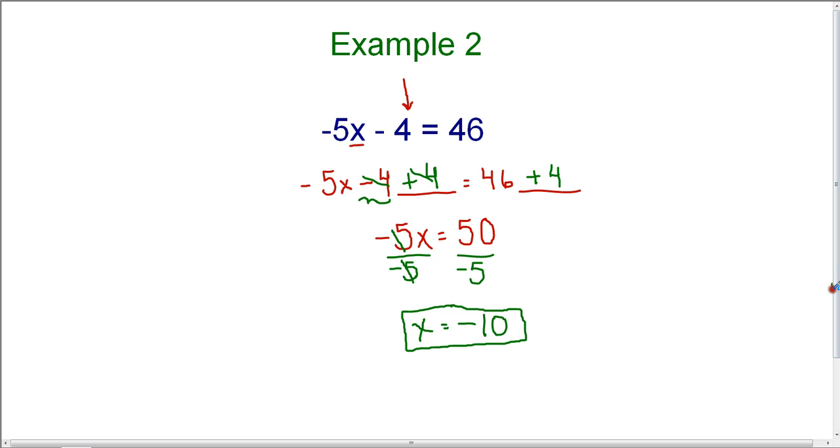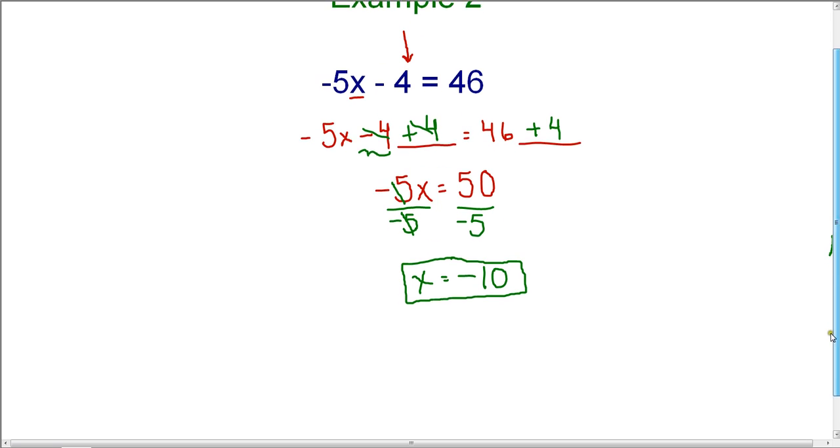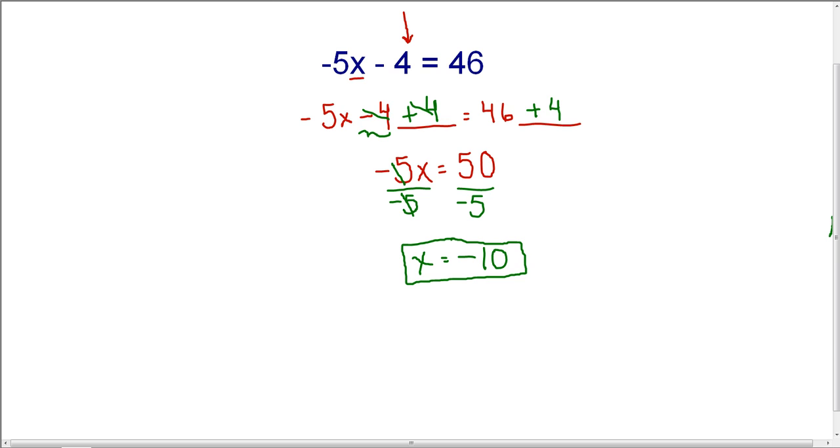Now, if you want to check your answer to this equation, all you need to do is substitute your answer back into the original equation for x. In this case, we have negative 5x minus 4 equals 46. I'm going to substitute negative 10 for x, because that's what x is equal to.